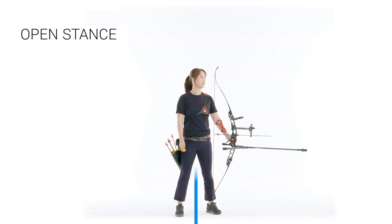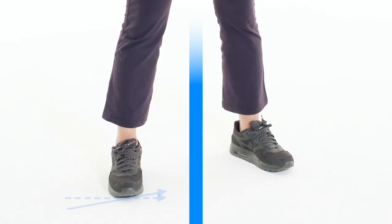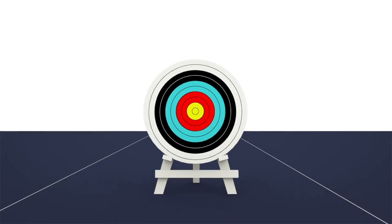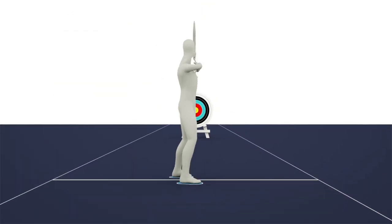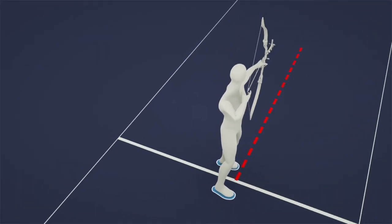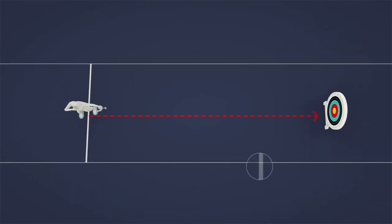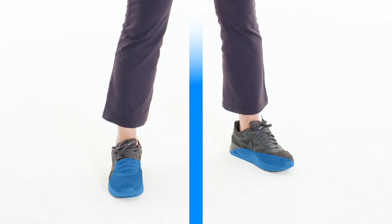Open stance is when the tip of an archer's front foot is moved back to be in line with the centre of their back foot. This results in their body being angled more towards the target whilst straightening the upper part of their body when shooting. This position can be adjusted by changing the angle to the target.